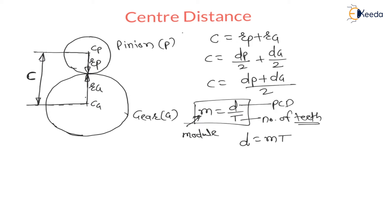For mating gears, the module of the pinion is always equal to the module of the gear. If the module of the pinion and the module of the gear are not the same, they will not mate — meaning there will be no relative motion between pinion and gear, as explained in the previous lecture. Therefore, here only the number of teeth varies.